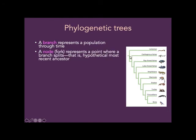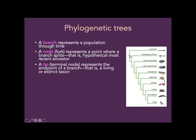A node or a fork is the point where a branch splits. That branching point represents a population of individuals that contains the most recent common ancestor — for example, of the lampreys and everybody else. The tip or terminal node represents the endpoints of the branch — these are the actual groups that we can see, like an existing species we can identify.